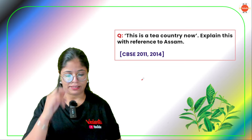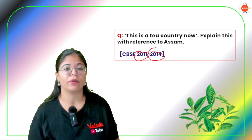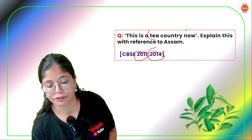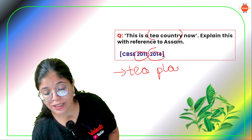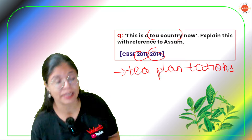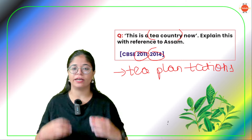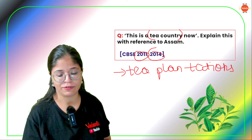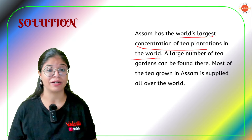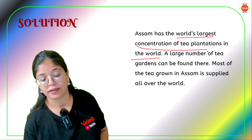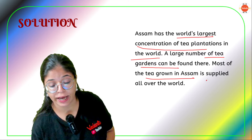Let's start with the most repeated short question answers. The first question comes from Tea from Assam: 'This is a tea country — explain this with reference to Assam.' This was asked in 2011 and 2014. The answer is that Assam has the world's largest concentration of tea plantations. A large number of tea gardens can be found there. That is why it is called a tea country.